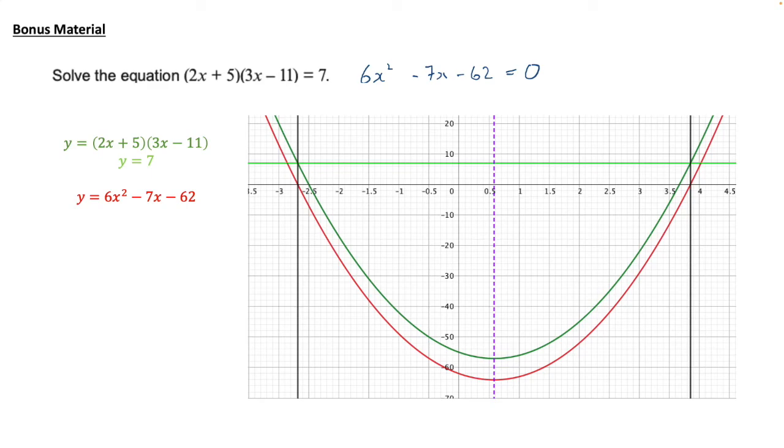So you'll notice then that the two answers we got cross these two curves and the line interestingly. The two green curves cross at these values and that makes sense because that's where they're equal to each other. The red curve is equal to 0 at these values and again that's where they're equal to each other. And that makes sense because 6x squared minus 7x minus 62 needs to equal 0. So that's how they link up.